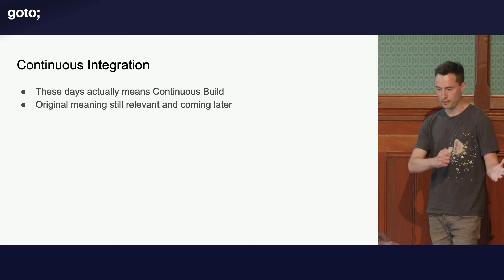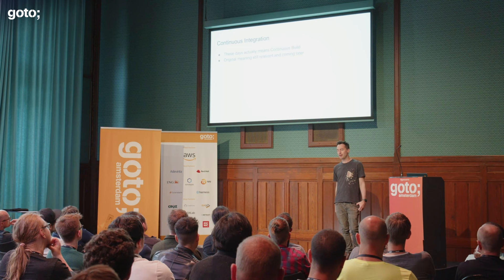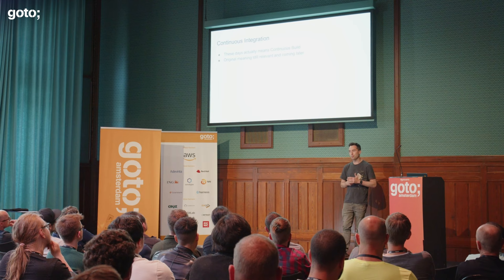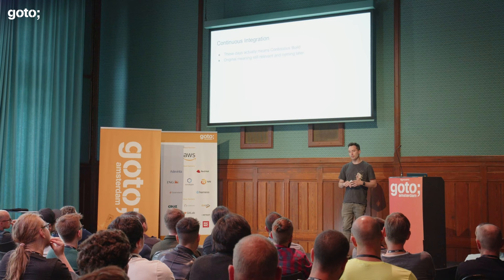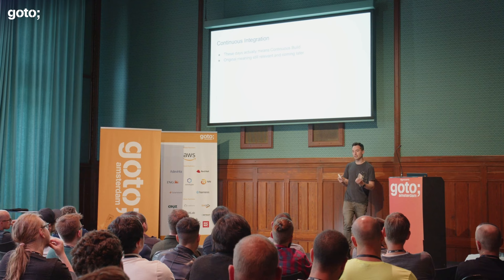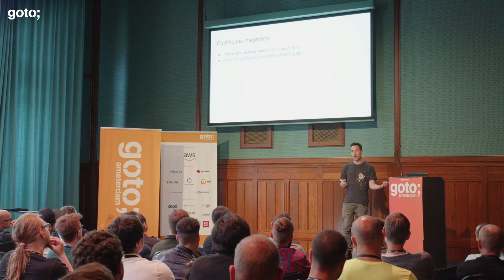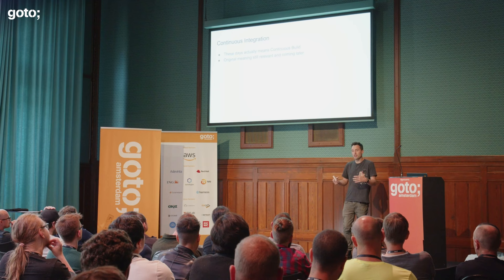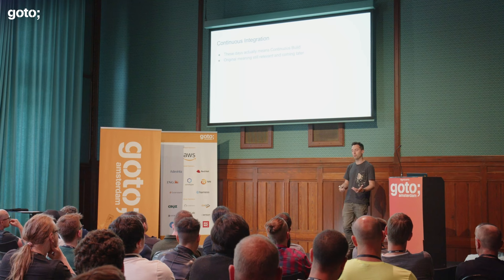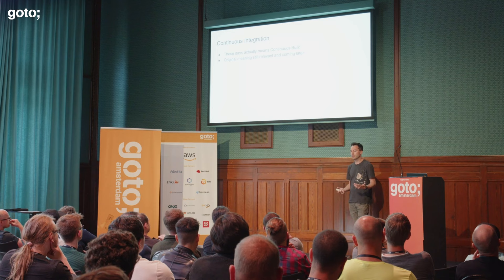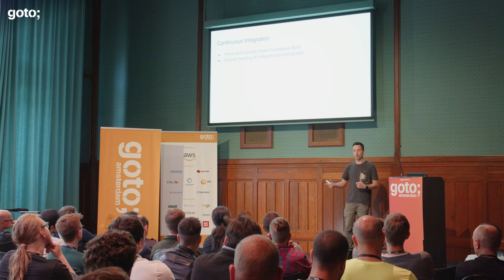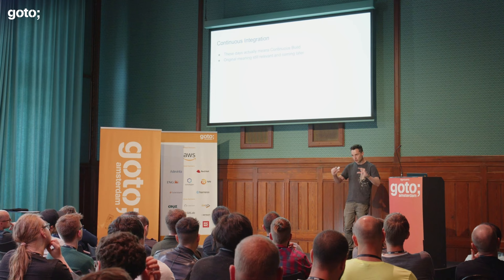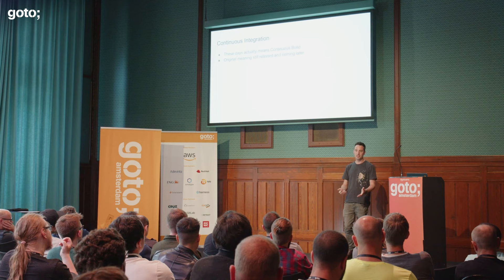So, current deployments. We've got CI — continuous integration. It used to actually mean taking every branch of code and continuously merging master in to catch integration issues up front, especially when all your microservices were actually one monolith. That's kind of come back with microservices. But nowadays it basically means continuous build: build, test, lint all the time.